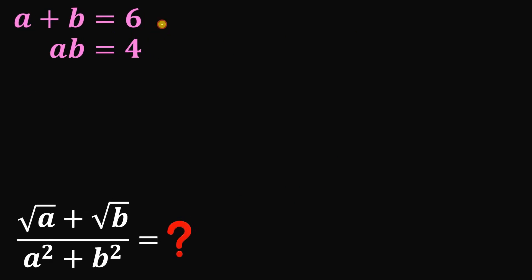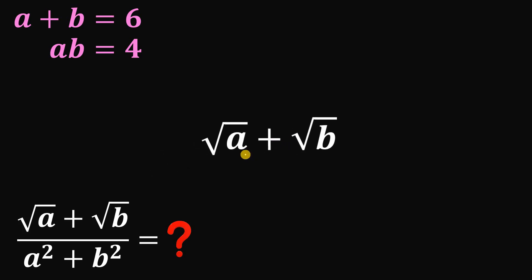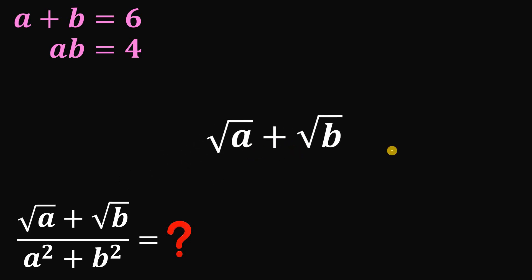Given that a plus b equals 6 and ab equals 4, we want to find the numerical value of square root of a plus square root of b, all over a squared plus b squared. To answer this, we're going to focus on square root of a plus square root of b.